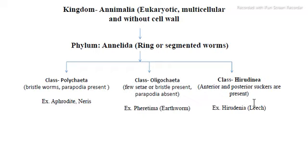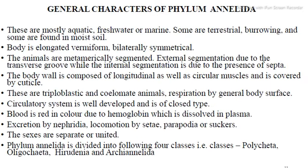The general characteristics of Annelida: they are mostly aquatic, freshwater, terrestrial, and burrowing. They are commonly found in moist soil. The body is elongated and bilaterally symmetrical — if an imaginary axis is drawn, the two halves are mirror images. The animal is metamerically segmented, meaning the body is divided into segments by transverse grooves on the external surface.